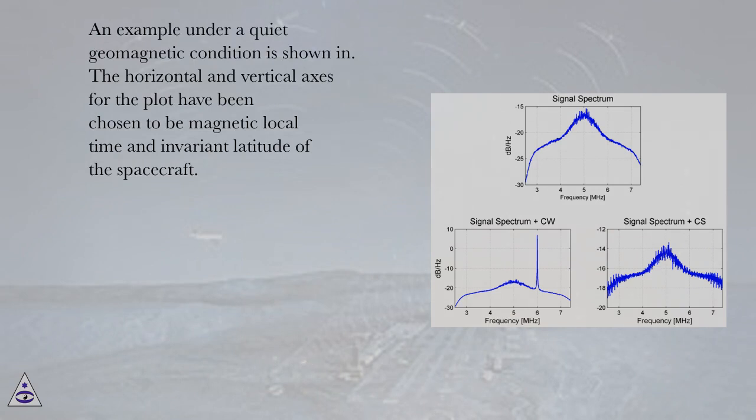An example under a quiet geomagnetic condition is shown. The horizontal and vertical axes for the plot have been chosen to be magnetic local time and invariant latitude of the spacecraft.